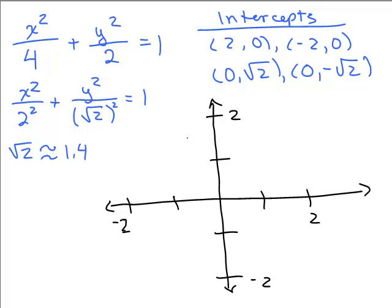I kind of drew big markings for where a unit is. So let's graph these four intercepts. On the x axis, we have 2, 0 and negative 2, 0. And on the y axis, we have 0 square roots of 2. That's approximately 1.4. So that's all we can do is we can approximate it. It's like a little less than 1 and 1 half, right? So it looks like this.